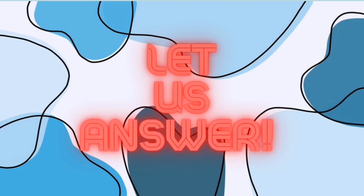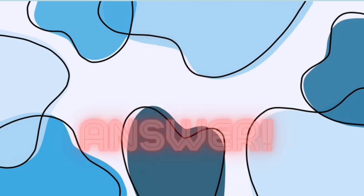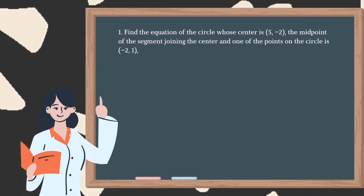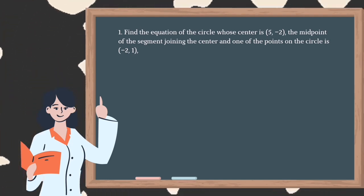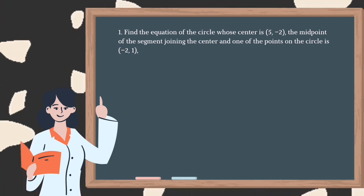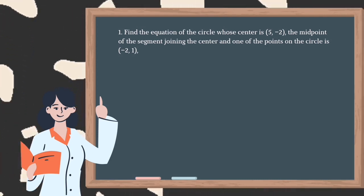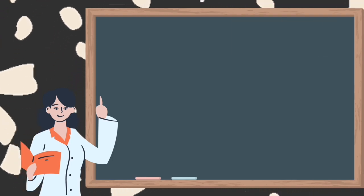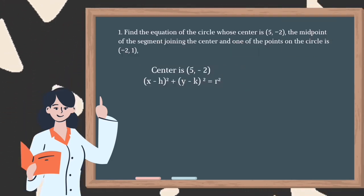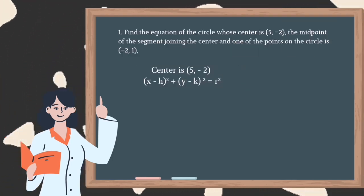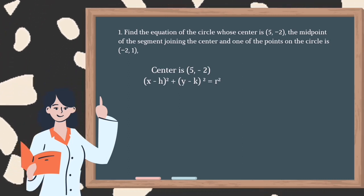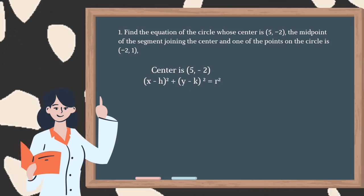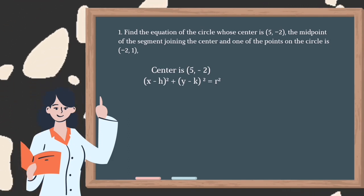Now that we have learned what a circle is, let us now answer our given problem. Problem number 1: Find the equation of the circle whose center is at (5, -2), and the midpoint of the segment joining the center and one of the points on the circle is (-2, 1). The center is at (5, -2), so we are going to use the standard equation: (x - h)² + (y - k)² = r².